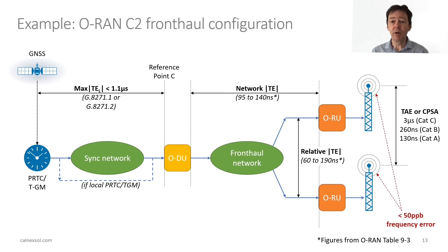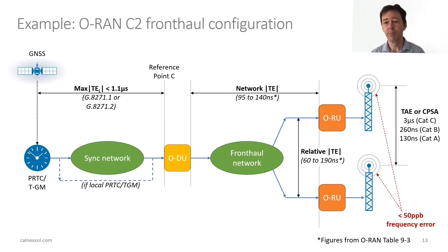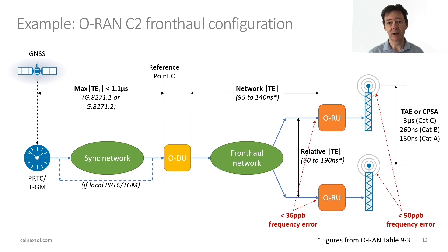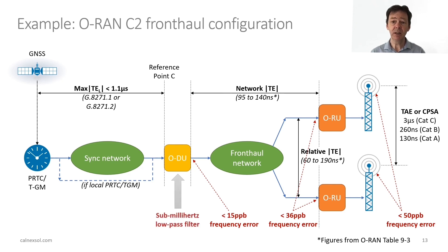We must not forget that there is also a frequency error requirement on the radio units — on the signals transmitted. This is a 50 parts per billion frequency error, measured over a very short time interval. In order to meet that requirement, we're budgeting for frequency error as well: at the input of the radio units there's a budget of 36 parts per billion, and at the output of the distributed unit there's a requirement of 15 parts per billion. This means that there must be a very low bandwidth filter within the distributed unit itself — a sub-millihertz filter. Traditional base stations have always had this filter; it's just that in a disaggregated base station it has moved into the DU.